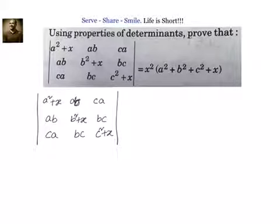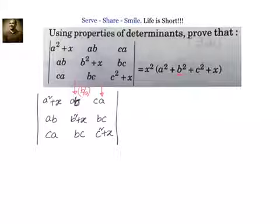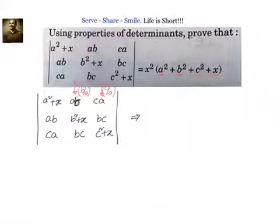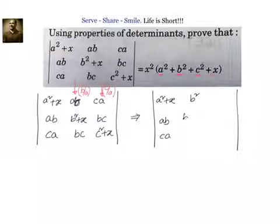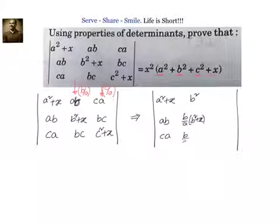Now, to get b squared in the second column, I will multiply the second column by b/a — ab times b/a gives b squared, and a squared plus x is already in the first column. Next, to get c squared, I will multiply the third column by c/a. So the first column remains the same: a squared plus x, ab, ca. The second column becomes b squared, then b/a into b squared plus x, and b/a into bc.